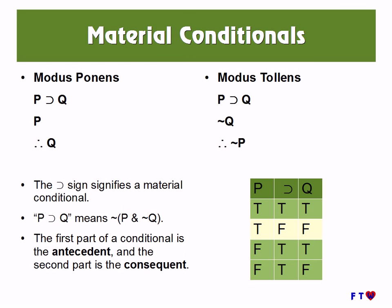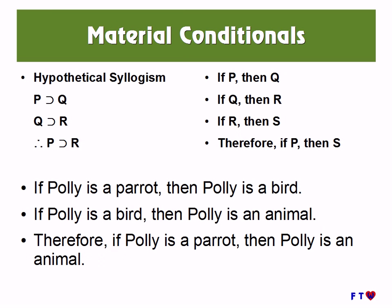Modus ponens is the rule for inferring the consequent of a conditional when we know that the antecedent of that conditional is true. Modus tollens is the rule for inferring that the antecedent of a conditional is false when we know that the consequent is false. Hypothetical syllogism allows us to take two conditionals and infer a single conditional that connects the antecedent of one to the consequent of the other, because they have a proposition in common — the consequent of one and the antecedent of the other. This shows the transitive property of the material conditional.